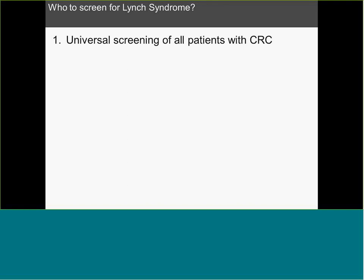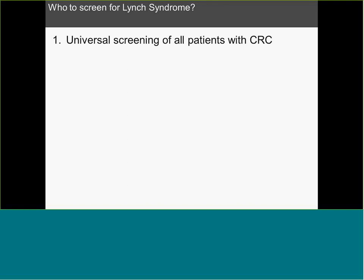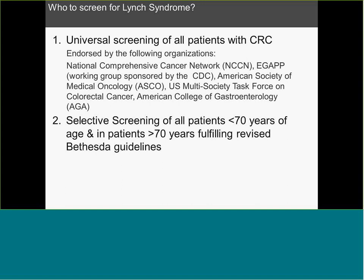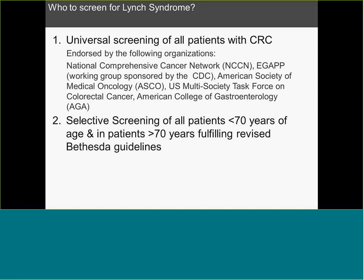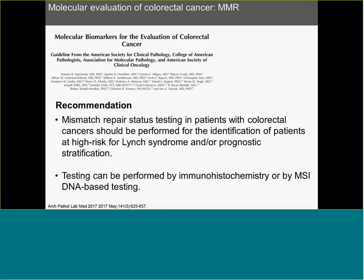While these histological features are very helpful in pointing us toward the MSI-high phenotype, sensitivity for detecting Lynch syndrome patients is only up to 85%. We can do better. Universal screening of all patients with colorectal cancer is endorsed by a number of organizations. Alternatively, selective screening based on an age cutoff of 70 years and fulfillment of the revised Bethesda guidelines is also endorsed but misses up to 5% of patients with Lynch syndrome. If one is in the business of identifying Lynch syndrome patients and their kindreds, the only answer going forward is universal screening for all patients with colorectal cancer.